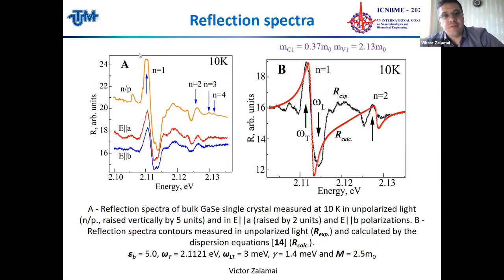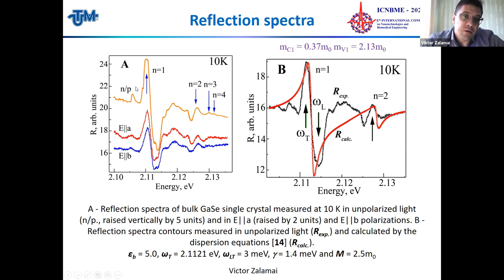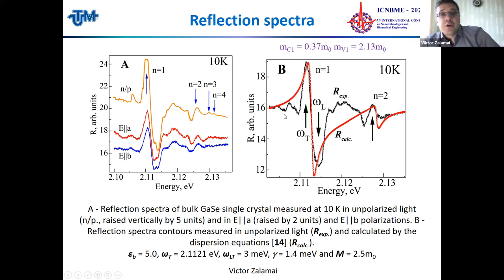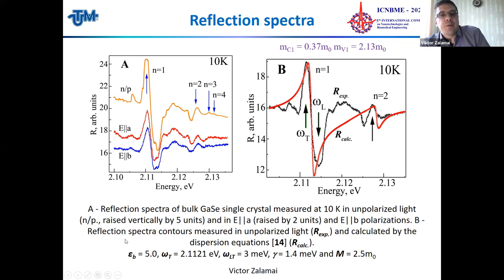Polarization reflection spectra measured at low temperature show an almost regular excitonic reflection spectrum. We see the ground state and the excited state. We calculated the reflection spectra using the dispersion equation and estimated the exciton parameters: background dielectric constant, energy of the transversal exciton, longitudinal-transversal splitting, damping constant, and effective mass of the exciton.